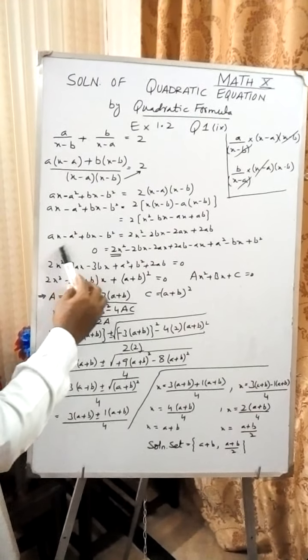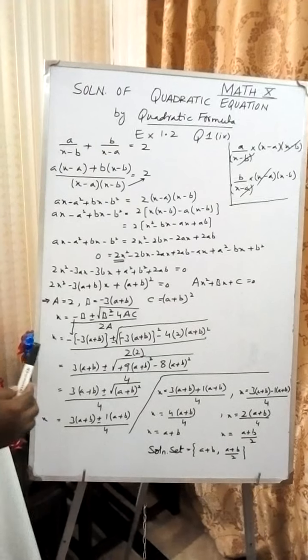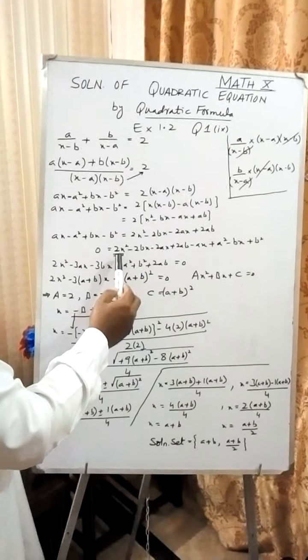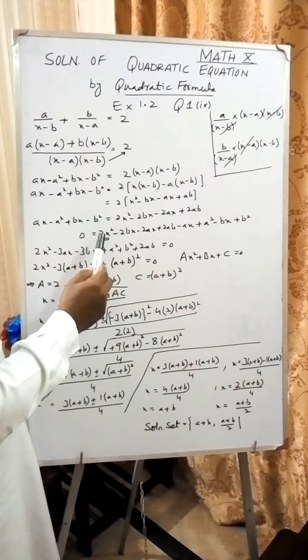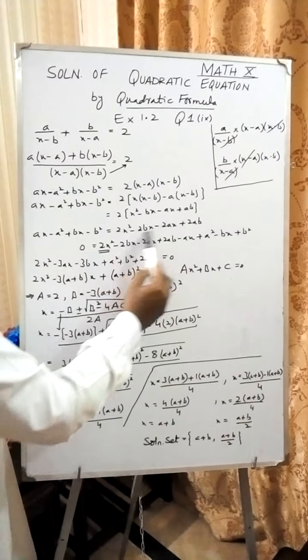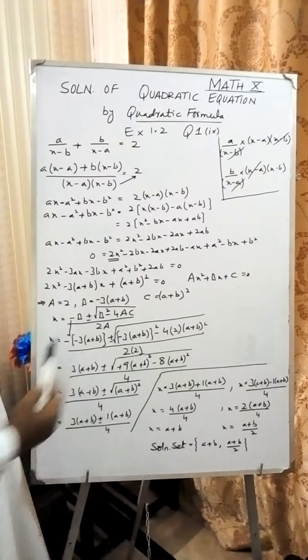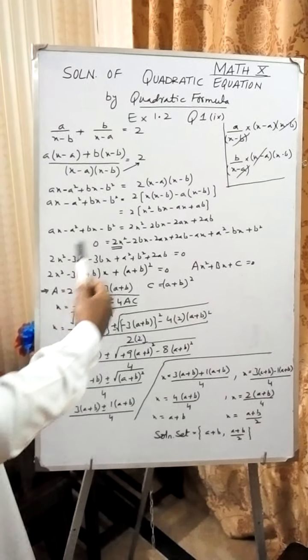After multiplication you will reach up to this step. Now we want to write the equation in standard form. x² is already having the positive coefficient, I will take it as it is. So all these terms will remain as it is; these will be shifted over here.